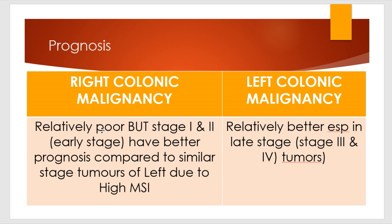Clinically, right colonic malignancy patients commonly present with anemic features — because the lesions are difficult to screen and diagnose on colonoscopy due to the flat type. Whereas in left colonic malignancy, the lesions are usually obstructive in nature, so obstructive features are very common. These were the important differentiating features between right colonic malignancy and left colonic malignancy.